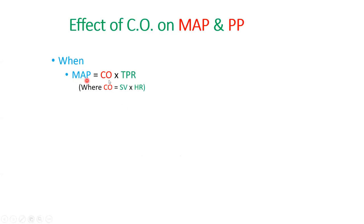We know that mean arterial pressure equals cardiac output multiplied by total peripheral resistance. We've also touched upon the fact that cardiac output is a product of stroke volume and heart rate. So stroke volume and heart rate of the heart result in a cardiac output, which then falls into the arteries, where together with vessel compliance it forms the mean arterial pressure.